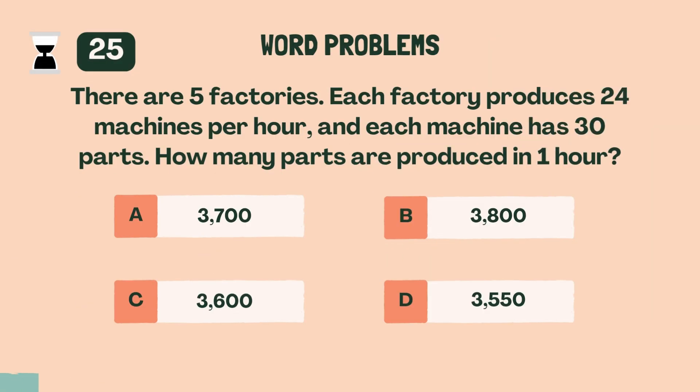There are five factories. Each factory produces 24 machines per hour, and each machine has 30 parts. How many parts are produced in one hour? C, 3,600.